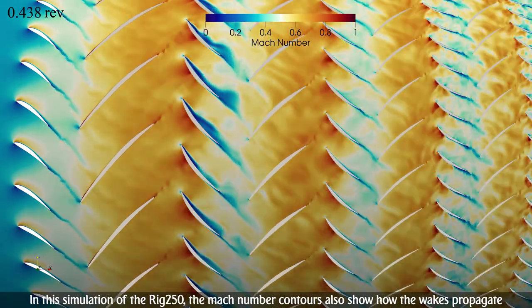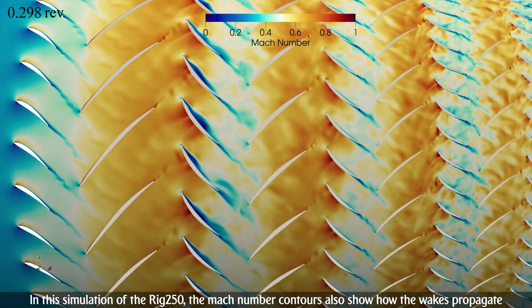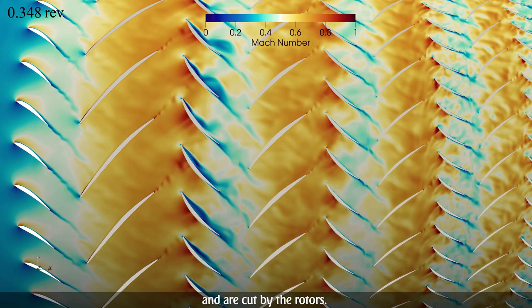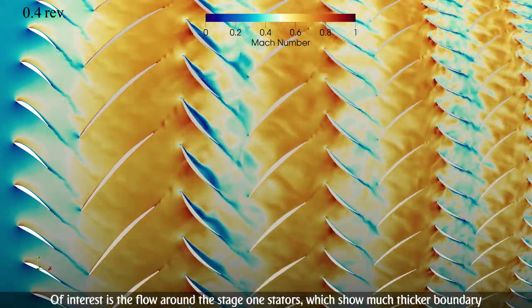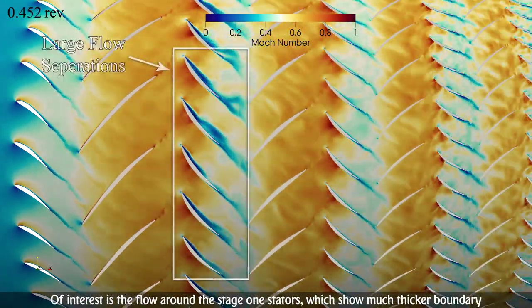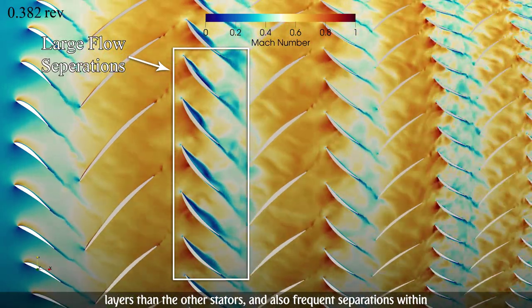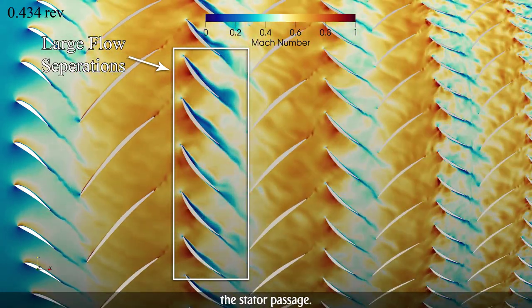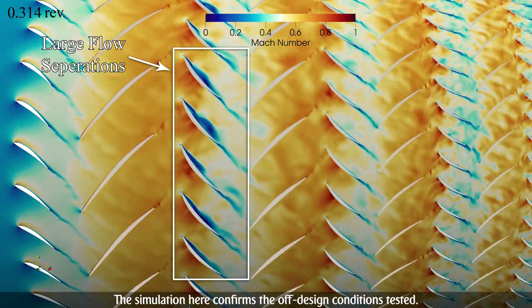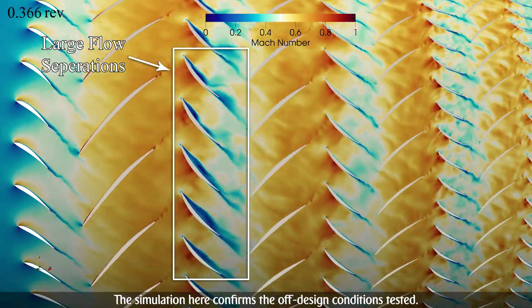In this simulation of the RIG 250, the Mach number contours also show how the wakes propagate and are cut by the rotors. Of interest is the flow around the stage 1 stators, which show much thicker boundary layers than the other stators, and also frequent separations within the stator passage. The simulation here confirms the off-design conditions tested.